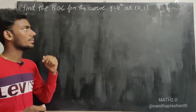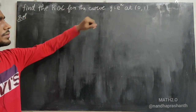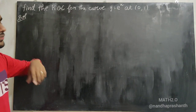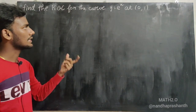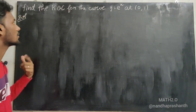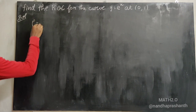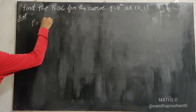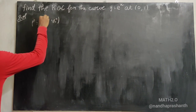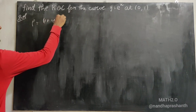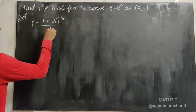So how do we get the radius of curvature? We use the Cartesian formula. The Cartesian formula is: rho is equal to 1 plus y₁ squared, whole power 3 by 2, divided by y₂.